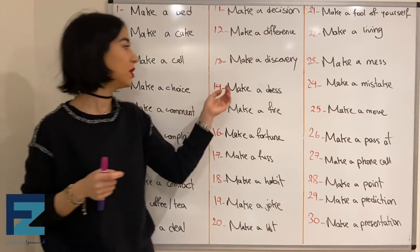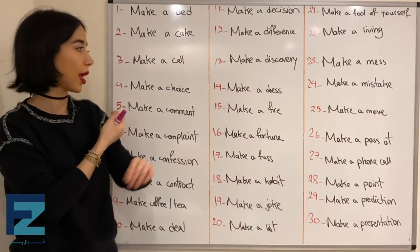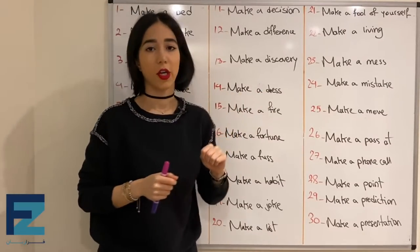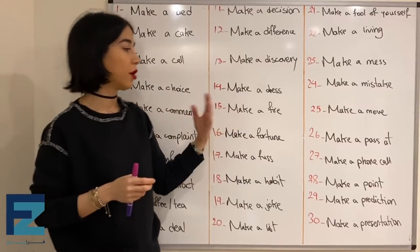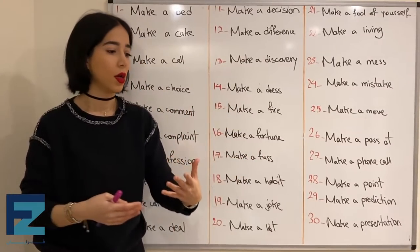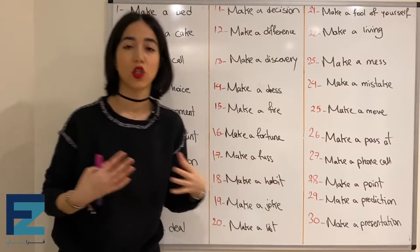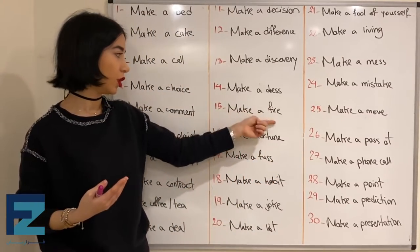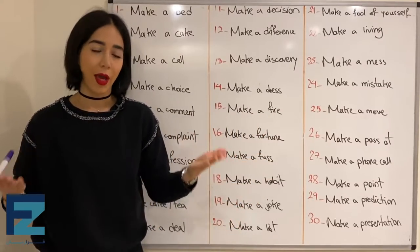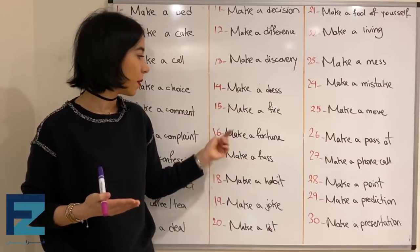Number fourteen: make a dress — means to sew a dress, لباس دوختن. Number fifteen: make a fire — means to create a fire to heat a place, آتیش درست کردن.